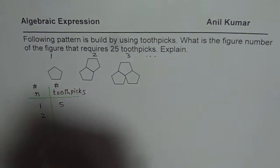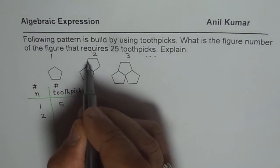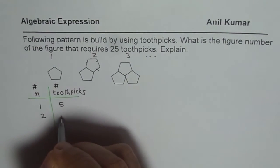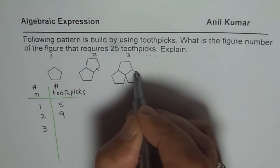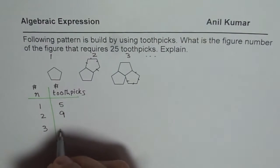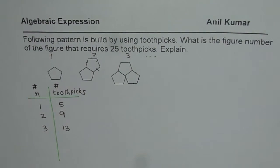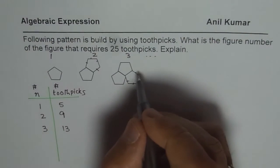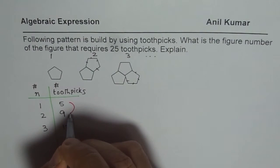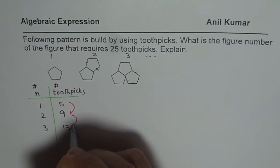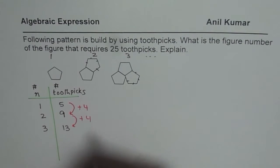If N is 2, then I already have 5. And then 6, 7, 8, and 9. So I have 4 more. So I get 9. For the third one, I have 9. Then 10, 11, 12, 13. So I have 13. So what I notice here is that every time I add a pentagon with the overlapping side, I increase the toothpick number by 4. So the difference here is 4 each time.